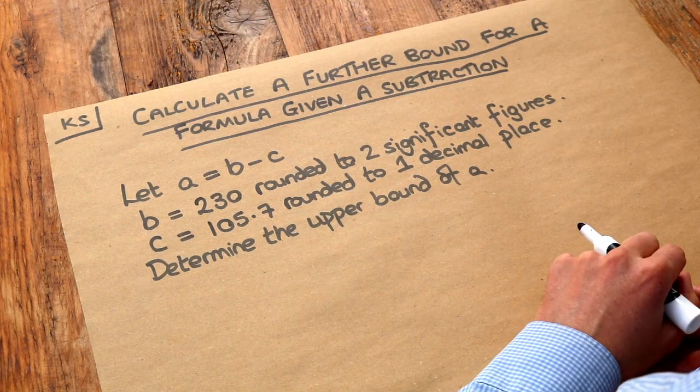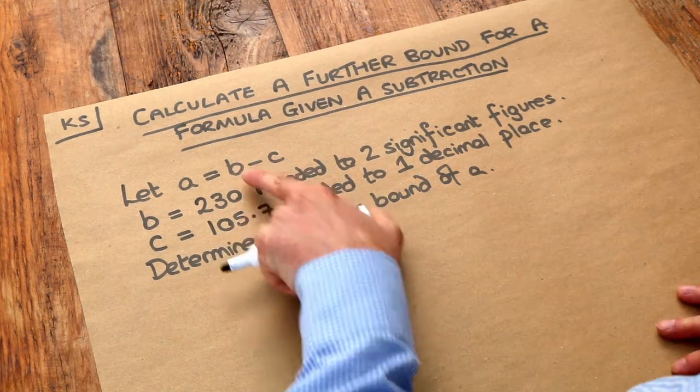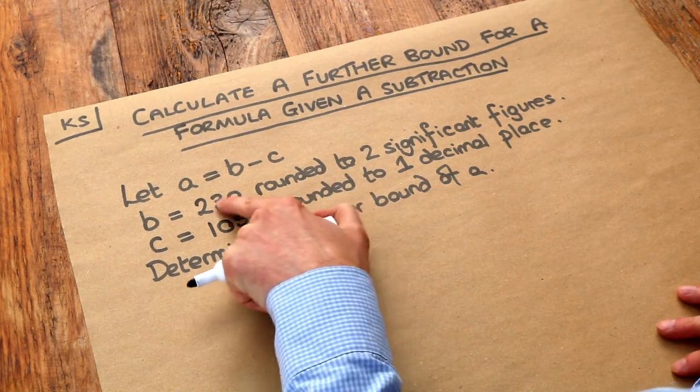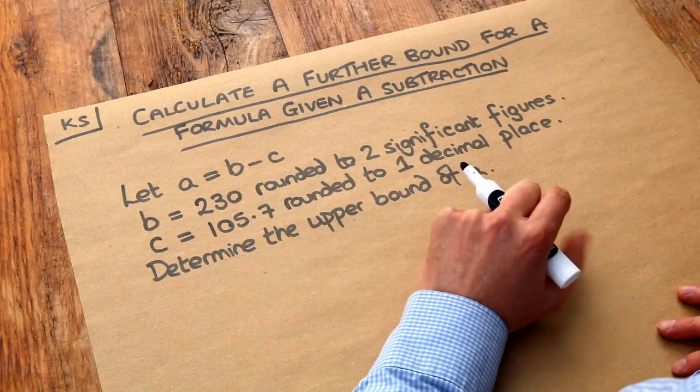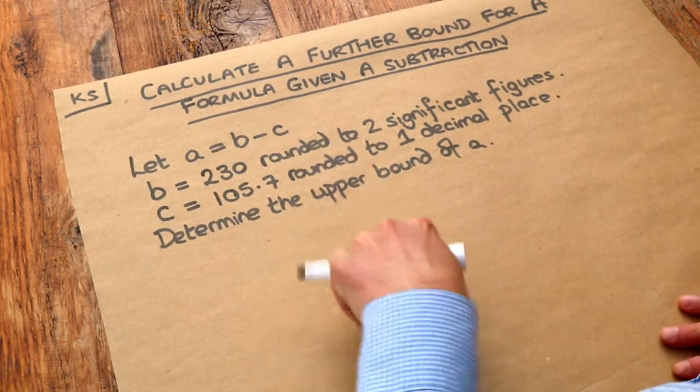We want to determine the upper bound of A. Now just to note that for B, B could be any value between the lower bound of this number and the upper bound of this number. So let's think about the lower bound and upper bound of B and the lower bound and upper bound of C first.